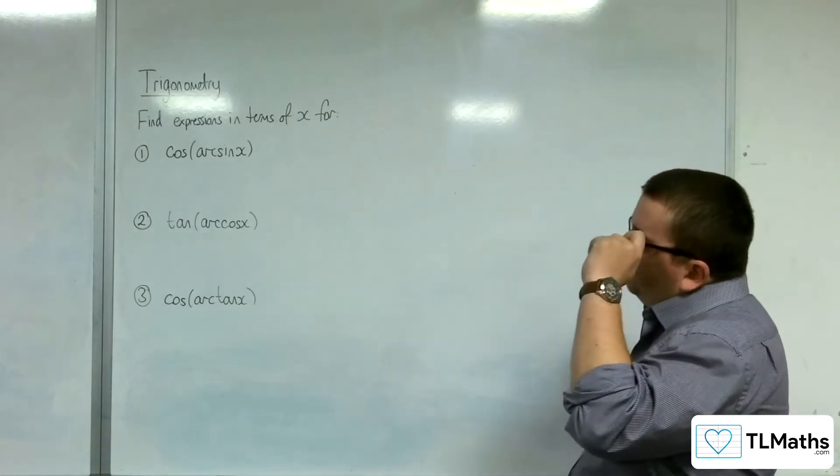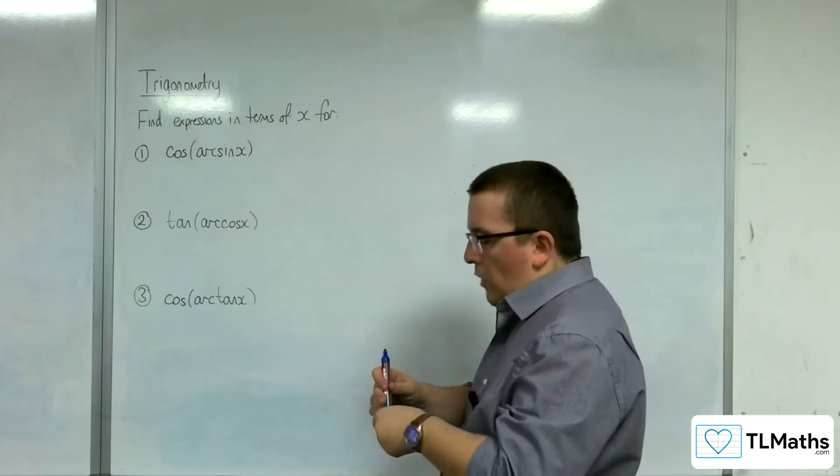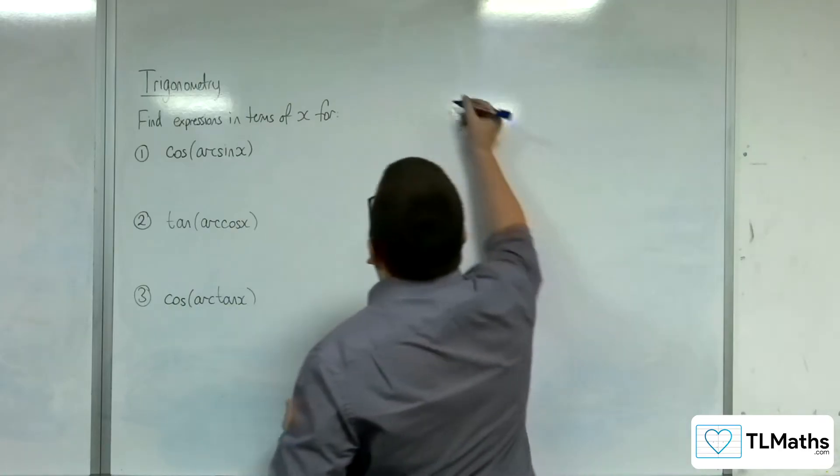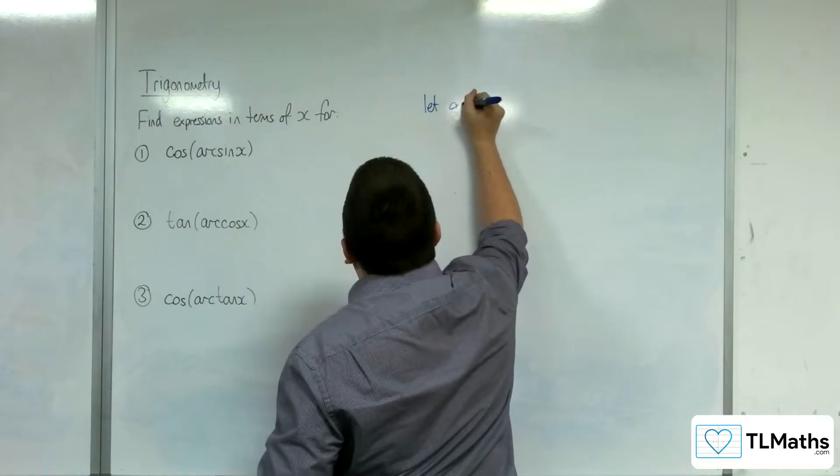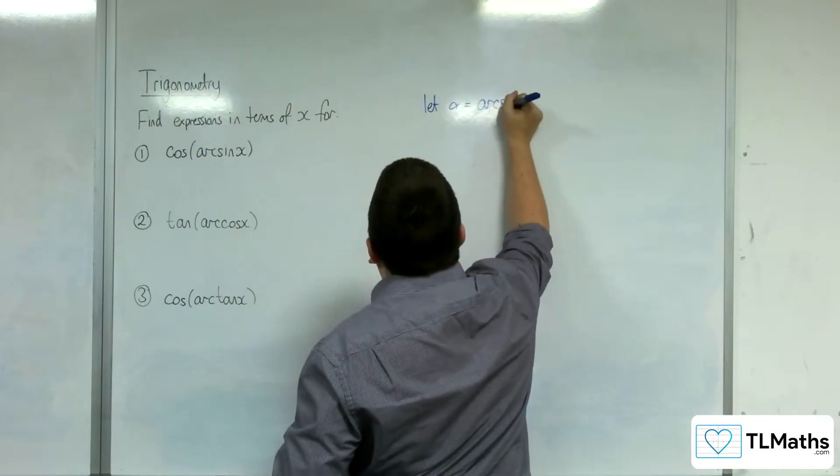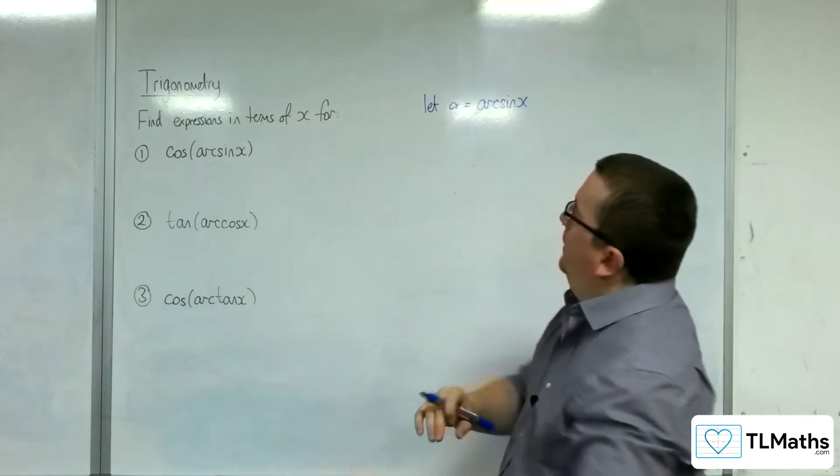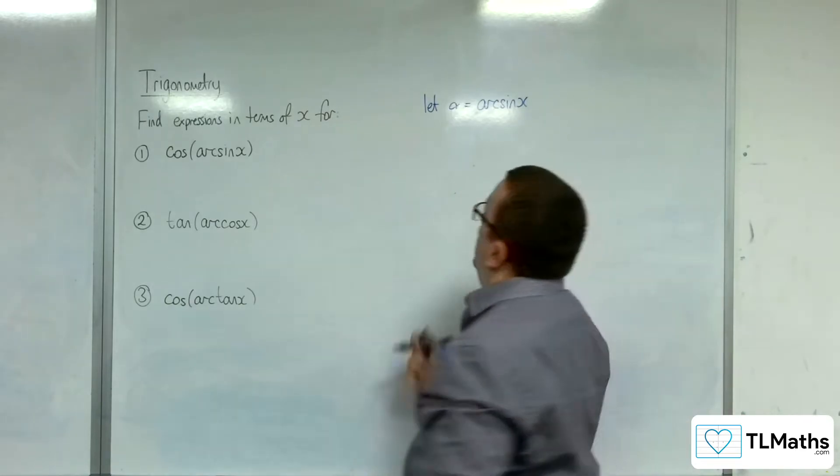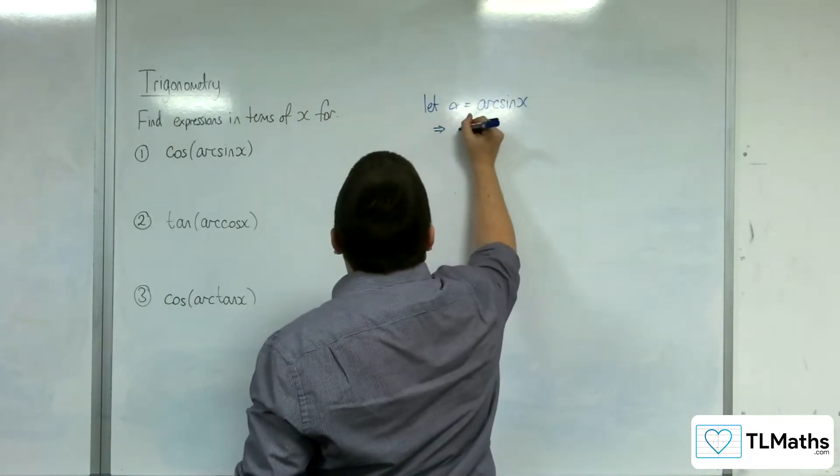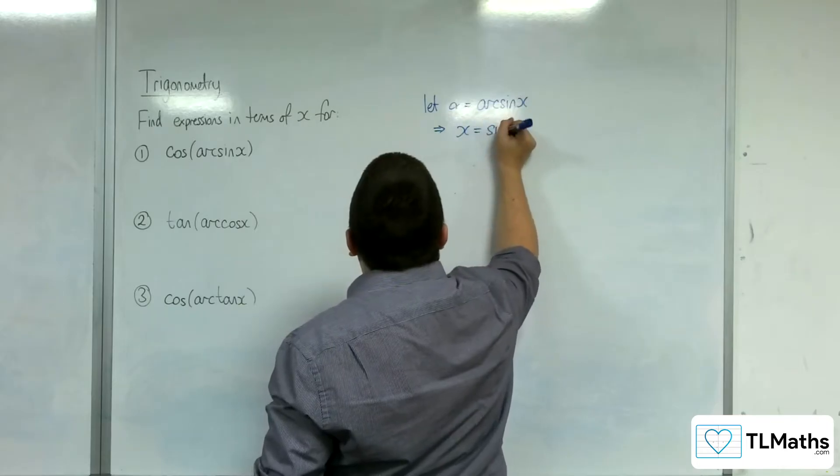The way that I would go about this is, for number one, I would let alpha be the arc sine x, the bit that's inside the bracket, inside the function. So if alpha is arc sine x, then that means that x is sine of alpha.